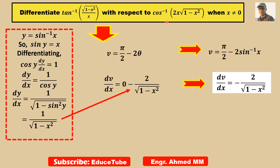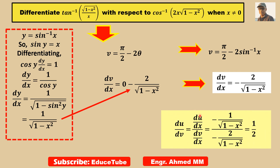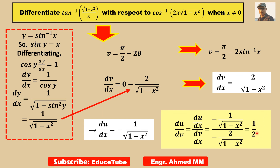Here this part we assumed u, and this part we assumed v. As I told, we need to find du by dv. So du by dv equals du by dx divided by dv by dx. We got du by dx equal to minus 1 by square root of 1 minus x squared, and dv by dx equal to minus 2 by square root of 1 minus x squared. The square root terms cancel, so it is 1 by 2, that means half. This is our answer.